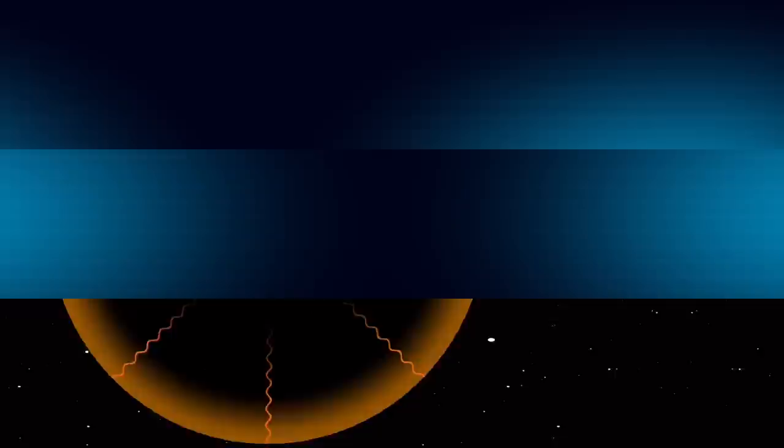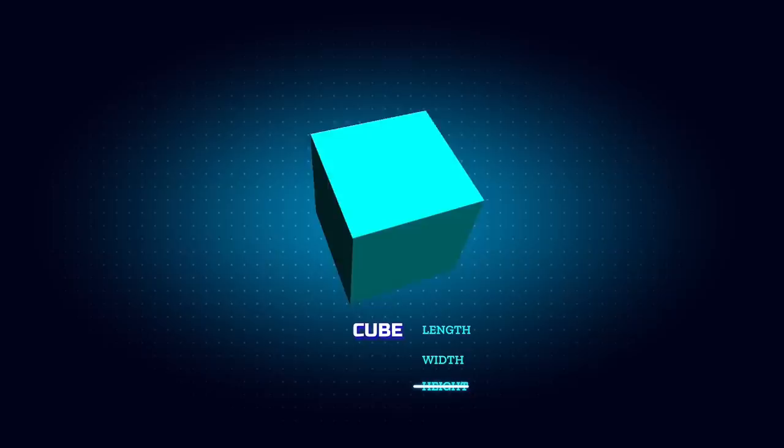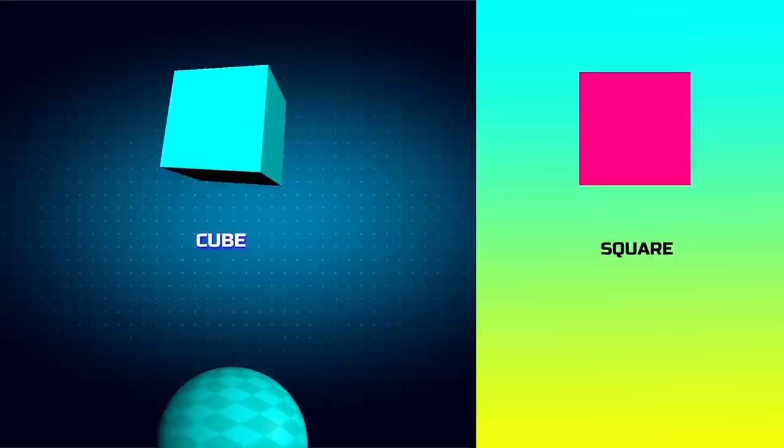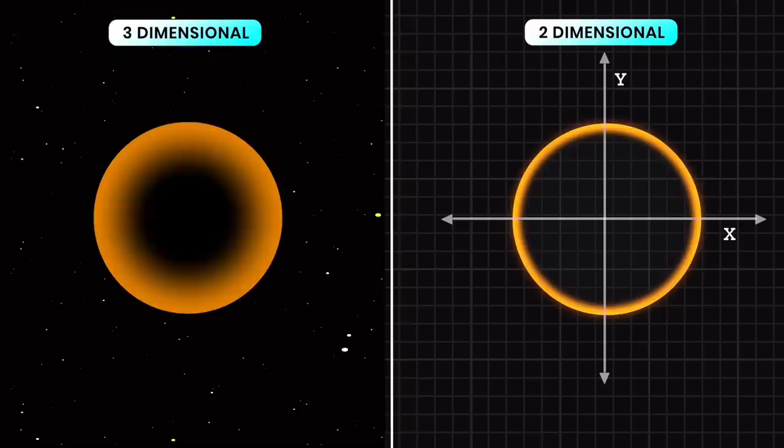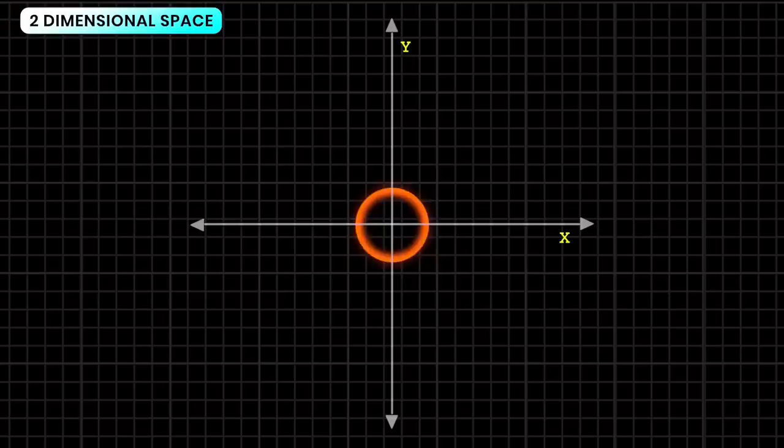Take a three-dimensional cube — to reduce it to two dimensions, we remove its height, giving us a square. Similarly, a sphere is a three-dimensional object whose two-dimensional version is a circle. If we convert three-dimensional space into two dimensions, we can see the flash of light traveling in the shape of a circle at the speed of light. For our purposes it is better to visualize space as two-dimensional because it's easier to understand.